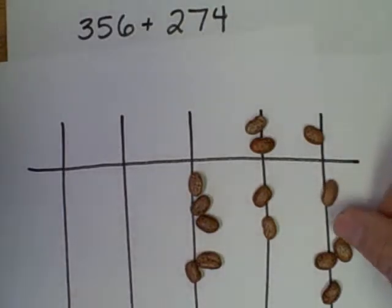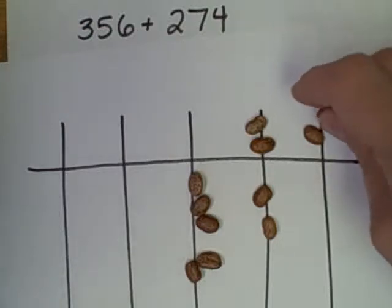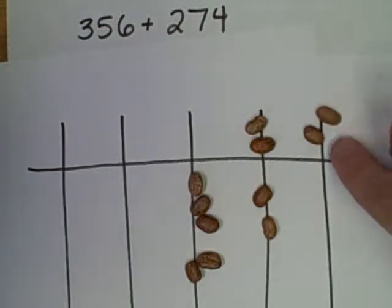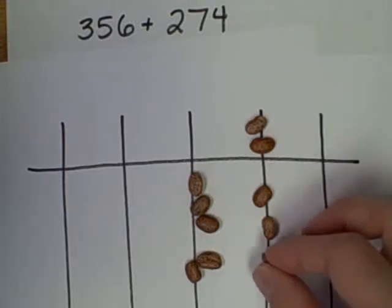And I have one, two, three, four, five ones. I exchange the five ones for one five. Now I have two fives which is a ten, so I exchange the two fives for one ten.